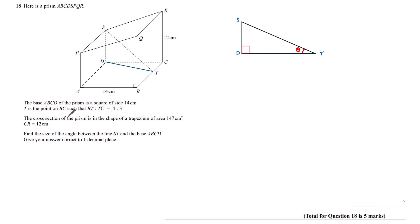Let's start with T is the point such that BT to TC is 4 to 3. If we split the line B to C into 4 plus 3, 7 parts, we know the length of BC to be 14 centimeters as this is a square. 14 divided by 7 is equal to 2, so each part is worth 2.